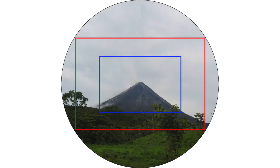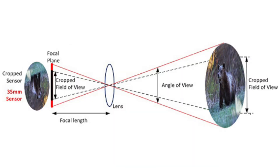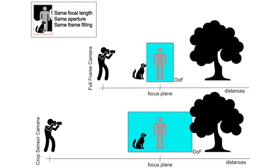A smaller sensor captures less of the image projected by a lens. So where a 50mm lens on a full-frame camera gives a field of view of 46.8 degrees horizontally, on a micro four-thirds camera it would give a field of view of 23.4 degrees horizontally. This is the equivalent of using a 100mm lens on a full-frame camera, which is why micro four-thirds cameras are said to have a 2x crop factor. In real-world use, this doubling of the effective focal length results in a doubling of the distance to your subject.